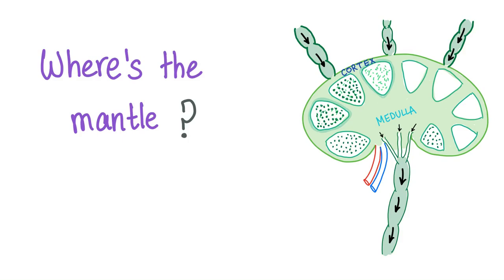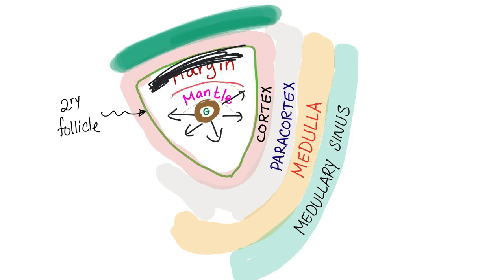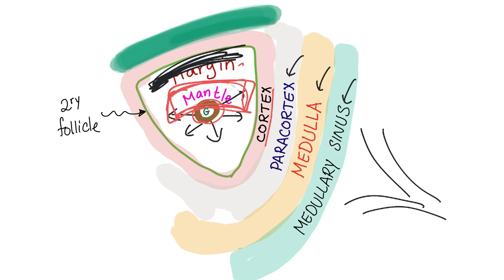When we say mantle cell lymphoma, where exactly is the mantle? Let's zoom in to a lymph node and take a closer look. When we zoom in, we see the follicle. A follicle that has a germinal center is called the secondary follicle. As the germinal center grows, it marginalizes some cells pushing them toward the margin, creating an area between the germinal center and the margin — we call this the mantle. The mantle is in the cortex. After the cortex, we have paracortex, then medulla, then medullary sinuses, which open into the hilum of the lymph node — the hilum is the exit.